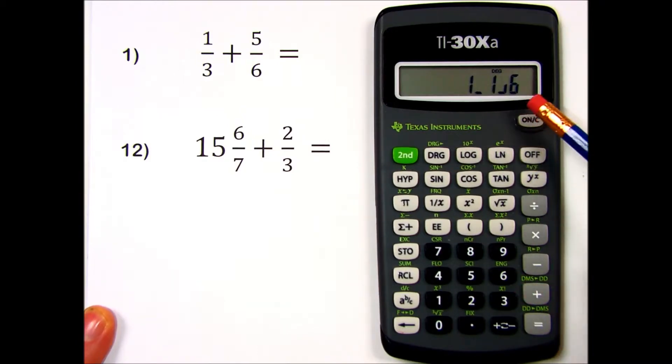My number displays in a mixed number format, 1 and 1/6. As a reminder, if I do want to see the improper format, I press 2nd, fraction key, and it displays 7/6. To return to the mixed number format, I simply press equals.